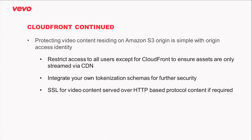It's also very simple to set up security with the origin access identity — you can ensure that people have to access content through the CDN, which ultimately pulls the data from S3. You can integrate your own tokenization schemas if you want to take it further — you can have token auth on your API, or even tokenize the actual playback links themselves. And with the recent ability to add SSL, you can take that route with your own domain name.